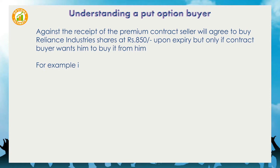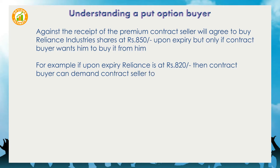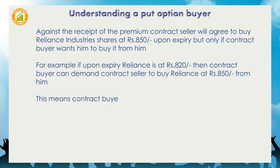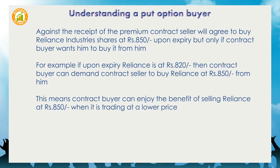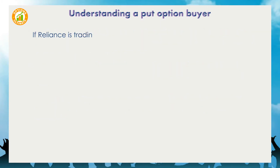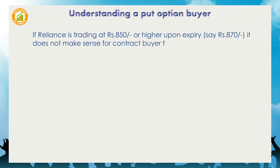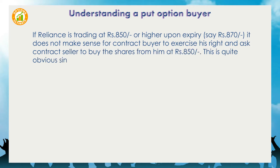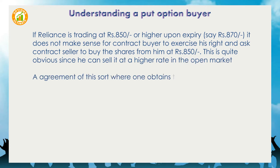For example, if upon expiry Reliance is at Rs.820, then the contract buyer can demand the contract seller to buy Reliance at Rs.850 from him. This means the contract buyer can enjoy the benefit of selling Reliance at Rs.850 when it is trading at a lower price in the open market — Rs.820. If Reliance is trading at Rs.850 or higher upon expiry, say Rs.870, it does not make sense for the contract buyer to exercise his right, since he can sell it at a higher rate in the open market. An agreement of this sort, where one obtains the right to sell the underlying asset upon expiry, is called a put option.